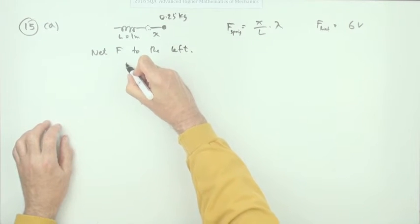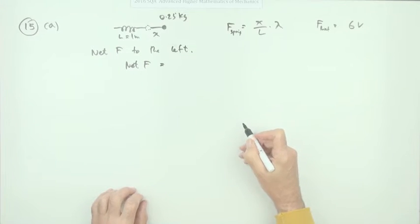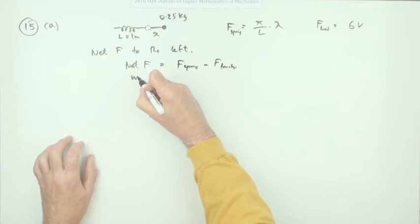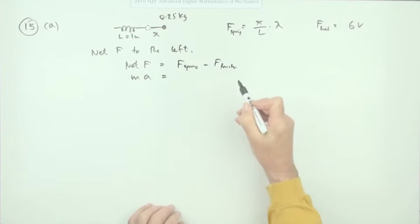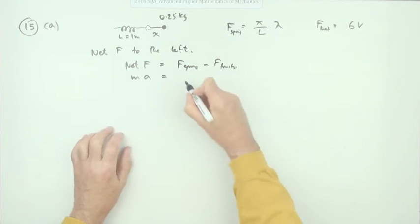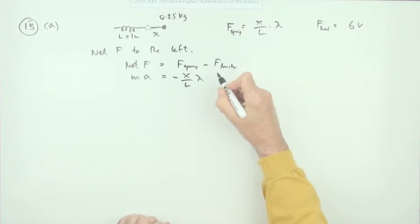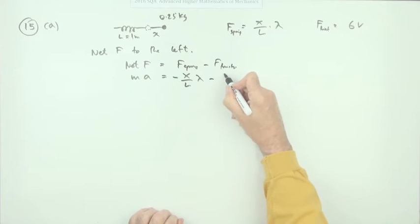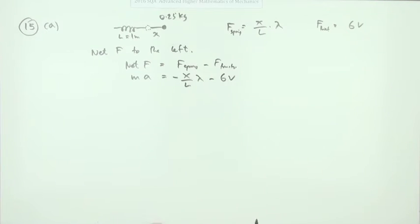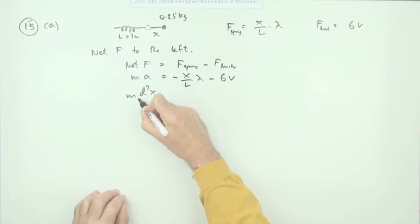The net force will be the force of the spring minus the force of friction. By F = ma, that gives ma equals the spring force: negative x over l multiplied by the modulus, since x is negative in our chosen direction. The friction force is 6v, and since v is to the left that part is positive. The acceleration is the second derivative of displacement.